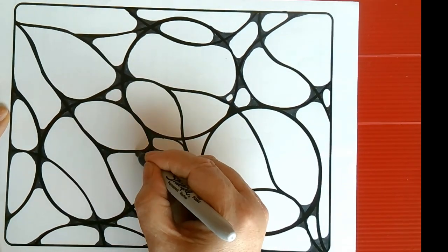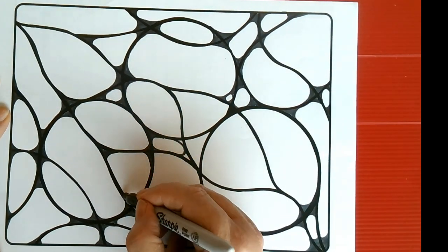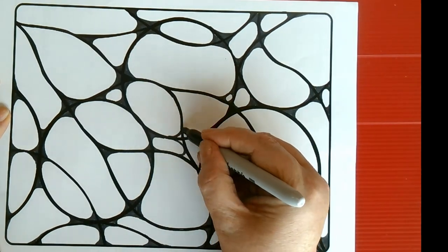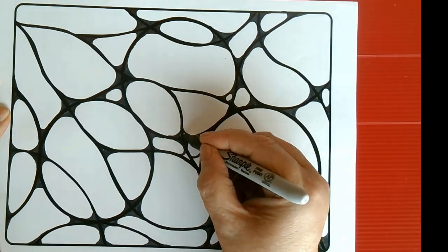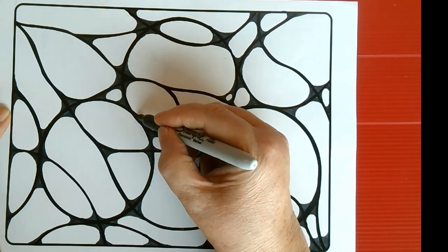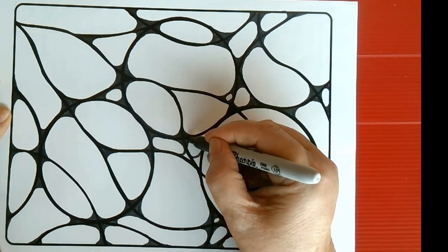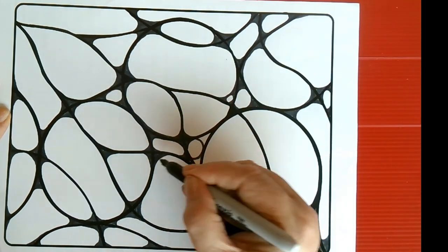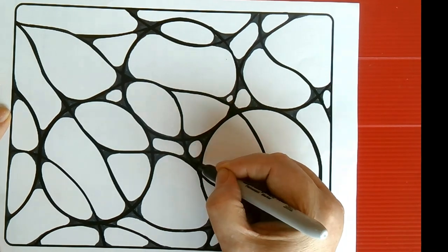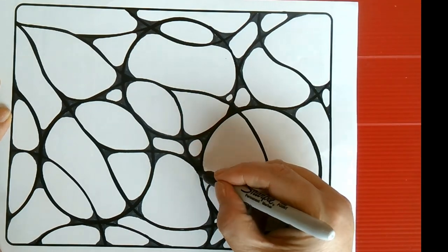As you draw, focus on the movement of your pen and the sensations in your body. As you continue to draw, begin to visualize your future self and the life you want to live. Imagine yourself living your dreams and goals as if they have already happened. Visualize the details, such as the people you are surrounded by, the environment you are in, and the emotions you feel.